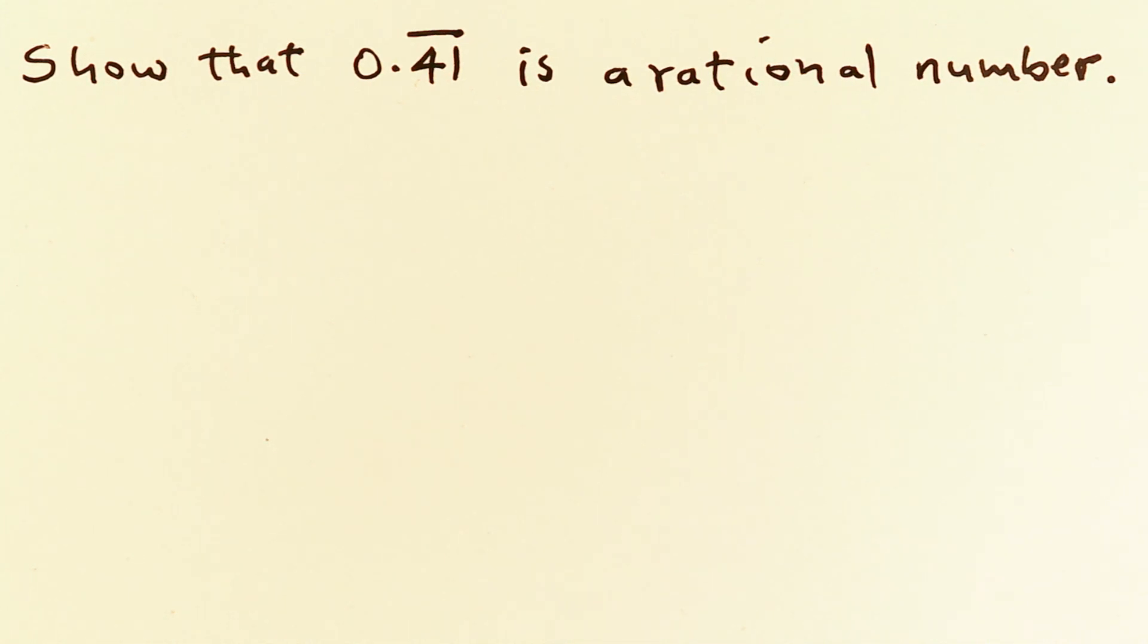Welcome to Calvin's Online Math. Let us look at this nice equation. Show that 0.41 recurring is a rational number.